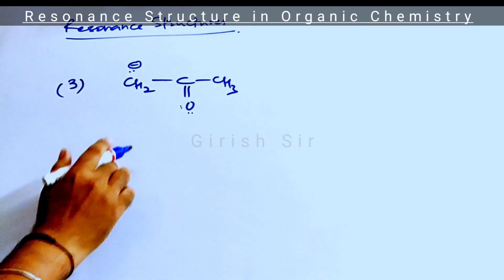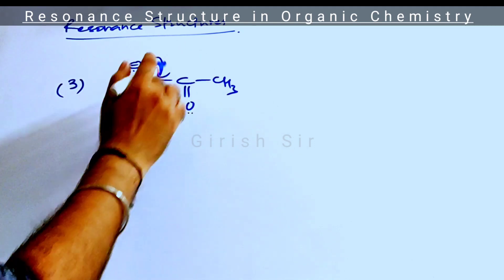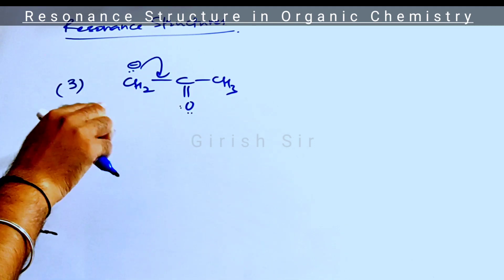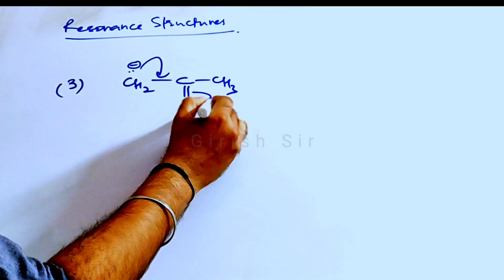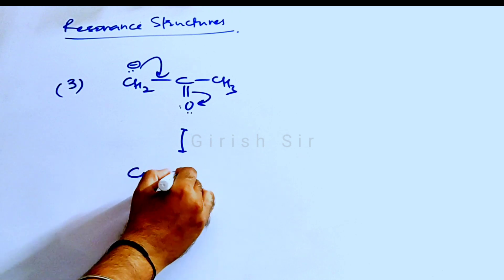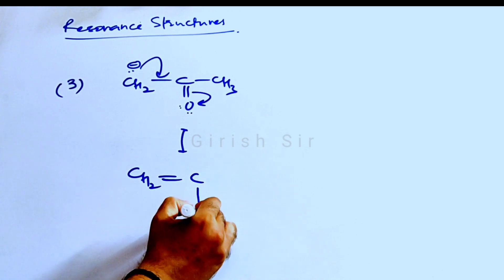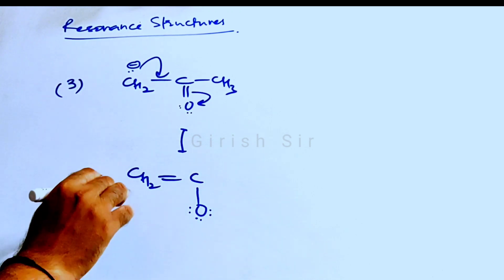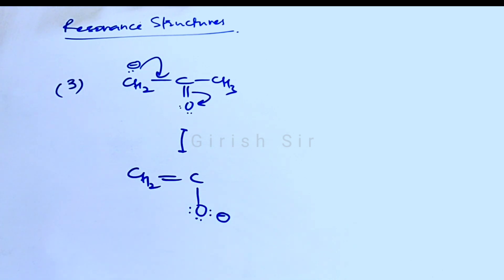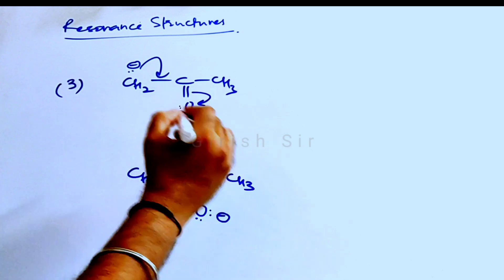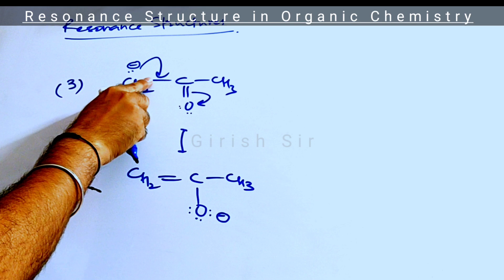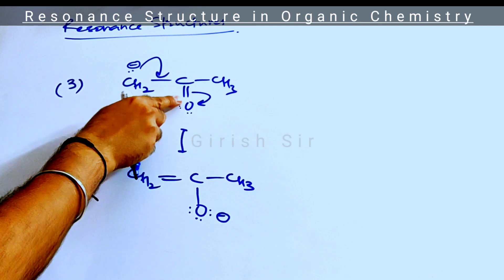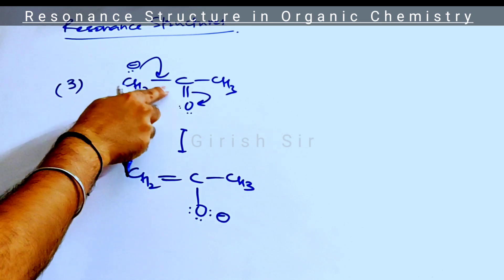Here we have a lone pair on carbon. This lone pair will tend to move towards a pi bond. To maintain tetravalency, this pi bond breaks, resulting in a negative charge on the oxygen atom. This is how delocalization is possible in this molecule — from this carbon, electrons are able to move all the way to oxygen. This is the extent of delocalization.